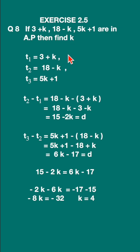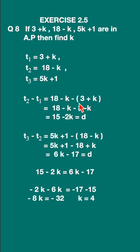If they are in arithmetic progression, their common difference will be equal. The common difference is found using t2 minus t1 and t3 minus t2. So t2 - t1 = (18-k) - (3+k). Opening the bracket it becomes minus 3 minus k, giving us 15 - 2k = d.